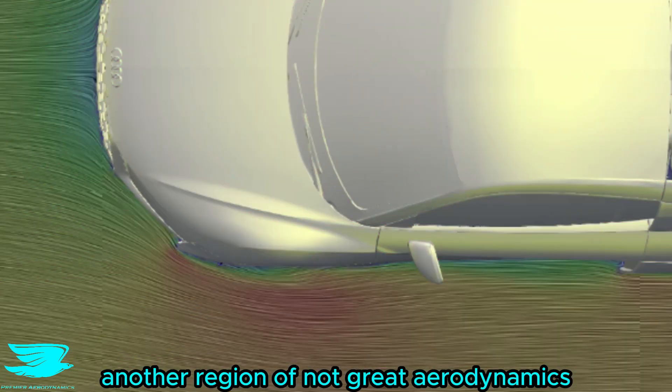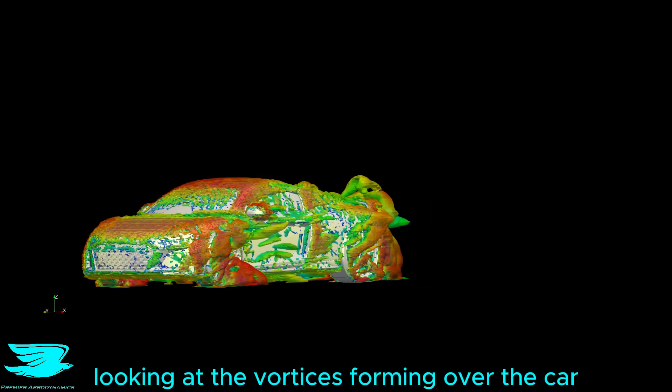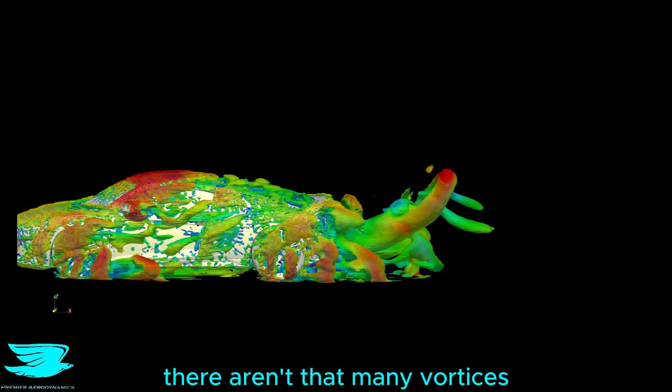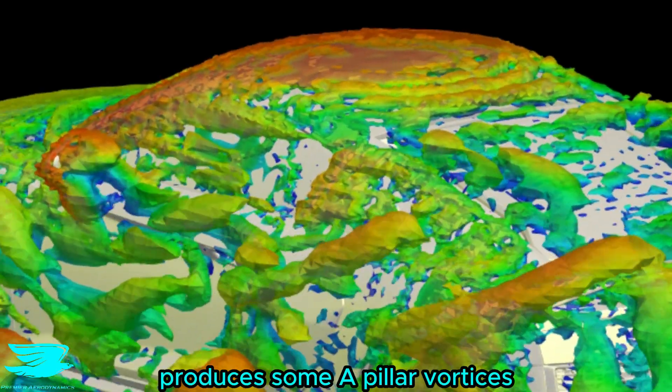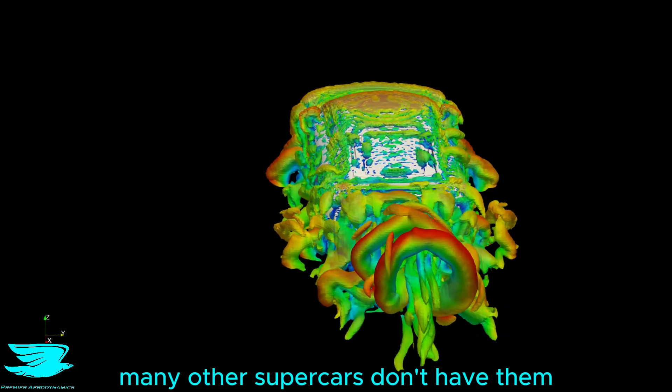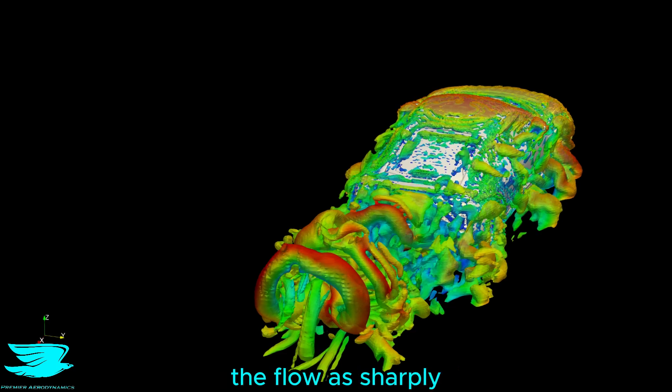Another region of not great aerodynamics is around the front wheels, where you get quite a lot of flow separation. Looking at the vortices forming over the car, there is quite a lot to be happy about. There aren't that many vortices from the lower half of the car, but the roof region, because it pokes out so much, produces some A-pillar vortices and C-pillar vortices. Many other supercars don't have them because their roofs are much sleeker, so the pillars don't jut out into the flow as sharply.